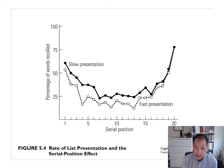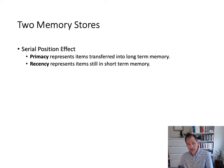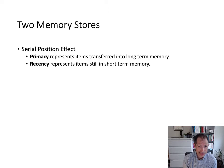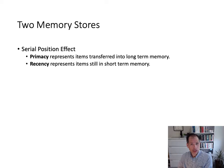So a fast presentation damages the primacy effect and the central part of the curve, but doesn't have a strong effect on the recency portion. What this suggested to psychologists was that the serial position effect implies two different kinds of memory storage systems. The primacy effect suggests the existence of a long-term memory store — you've rehearsed those words long enough that they've become strong enough in long-term memory to be recalled later, even with a filled delay. The recency effect comes about because of items still in the short-term memory buffer that haven't been written over or pushed out.